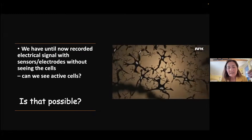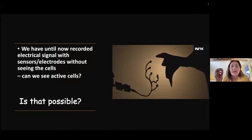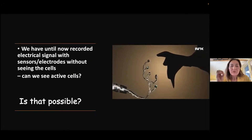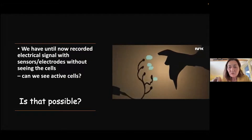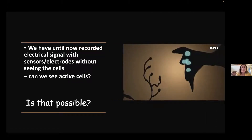So what we have been talking about is recording electrical signals by having small sensors close to the cells. But we haven't actually seen the cells we record from — we don't know how they look or exactly where they are located. The question now is: can we see such active cells? Is that really possible?